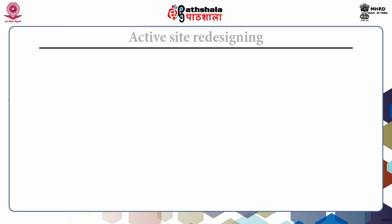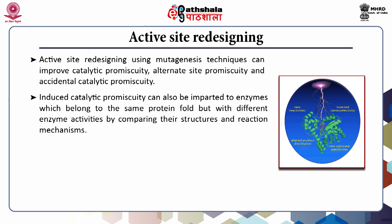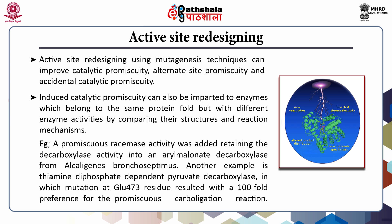Active site redesigning using mutagenesis techniques can improve catalytic promiscuity, alternate site promiscuity, and oxidant catalytic promiscuity. Induced catalytic promiscuity can also be imparted to enzymes belonging to the same protein fold but with different enzyme activities by comparing their structures and reaction mechanisms. For example, a promiscuous reductase activity was added while retaining the decarboxylase activity in an aryl-malonate decarboxylase from Alcaligenes bronchisepticus.